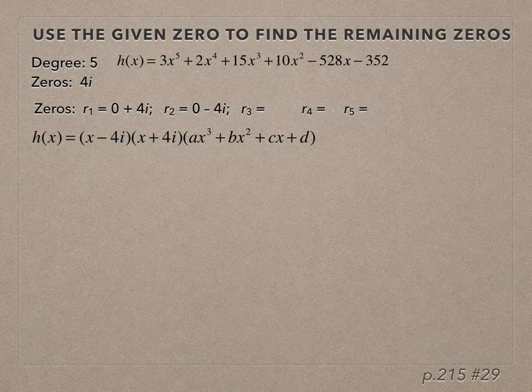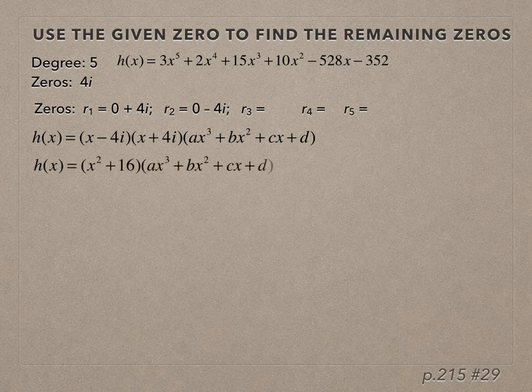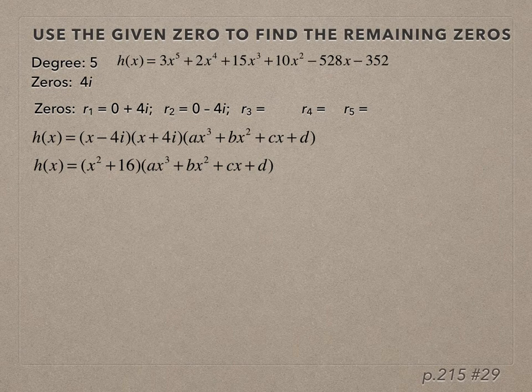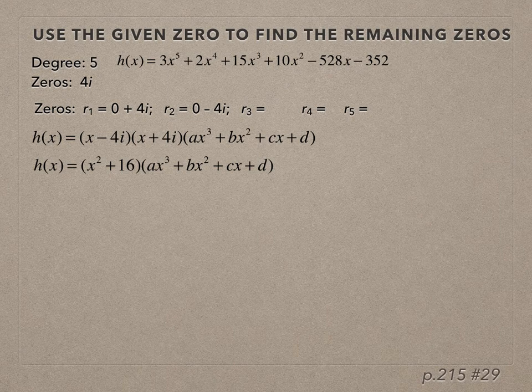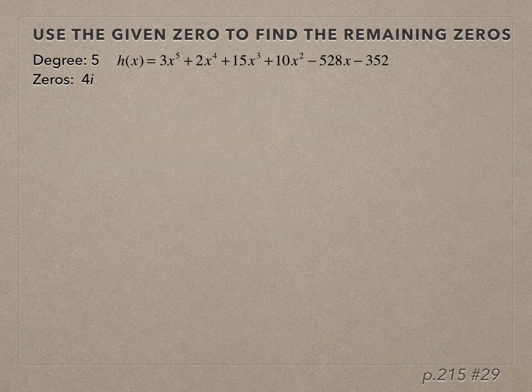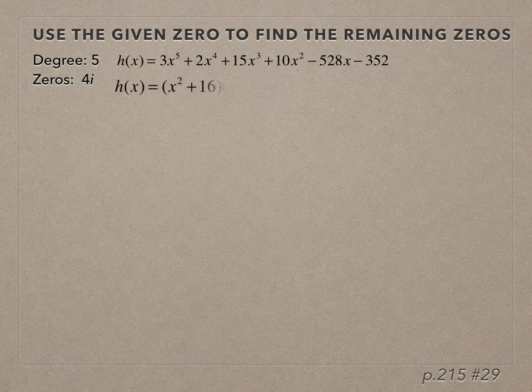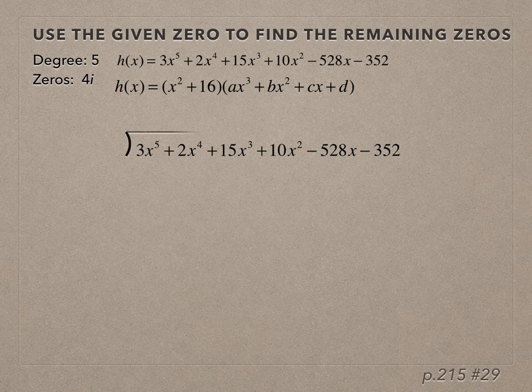Let's simplify (x - 4i)(x + 4i). That's x² - 16i², but i² is -1, so we have x² + 16 times the cubic. So what do we do with that information? We're going to take the original polynomial function and divide by x² + 16.